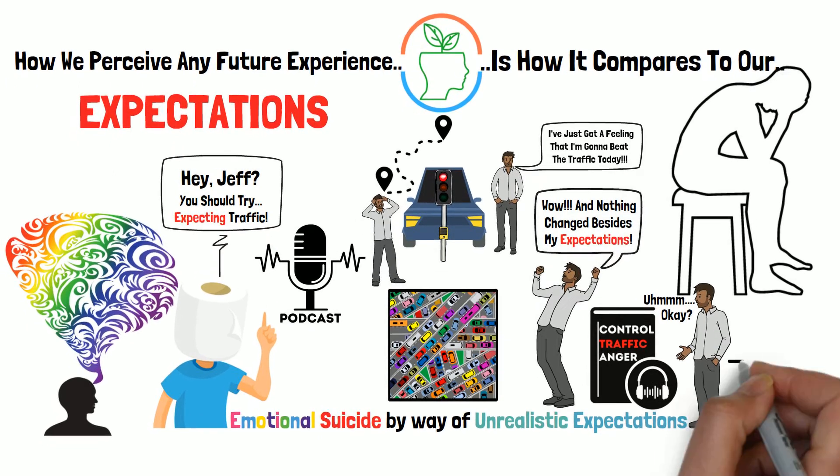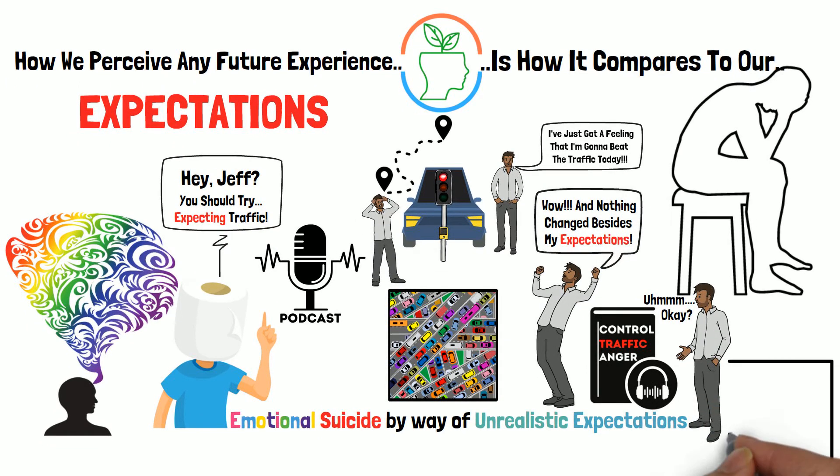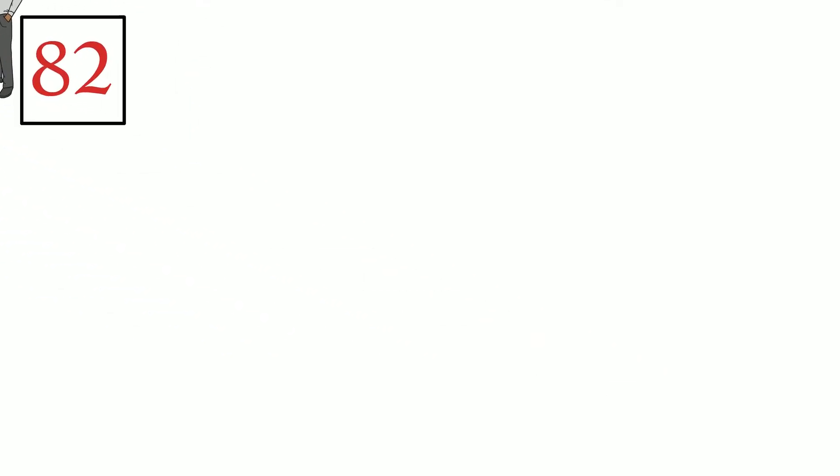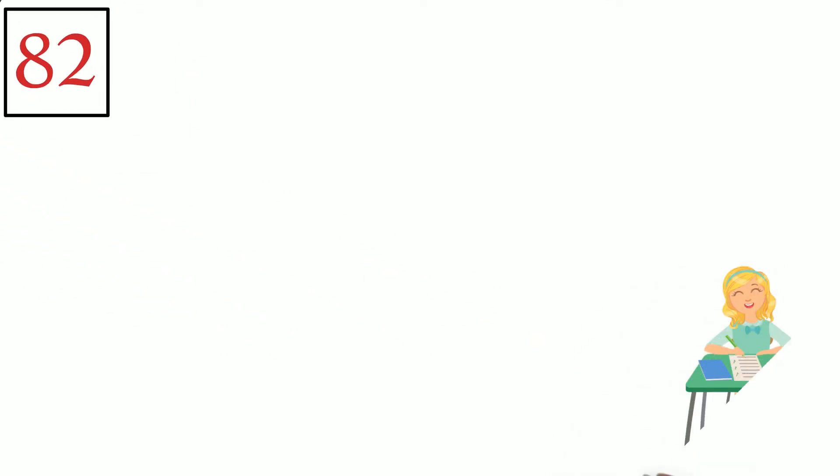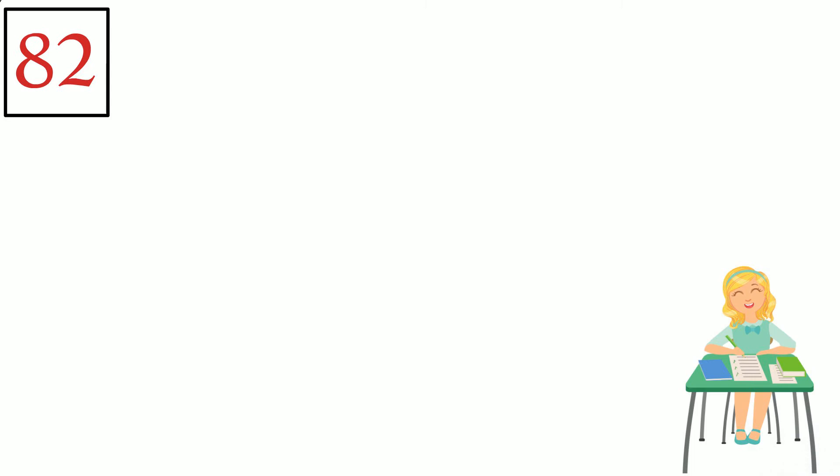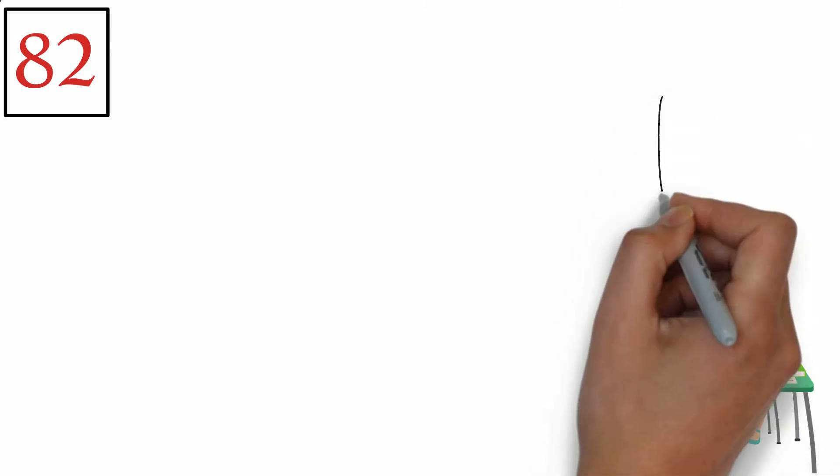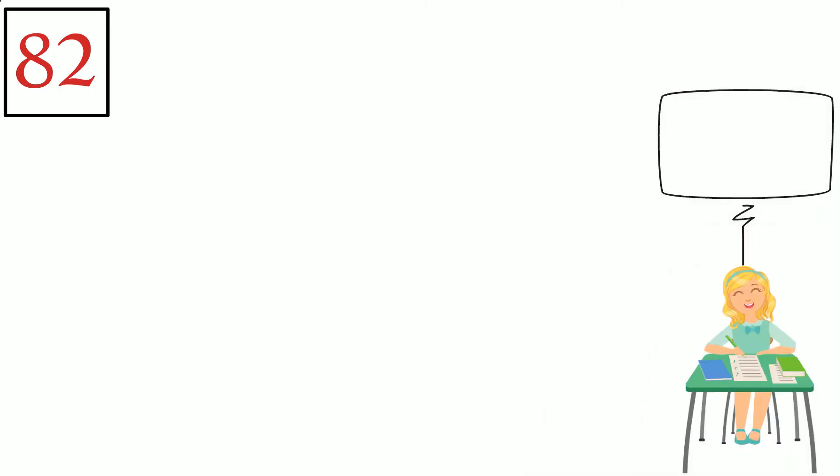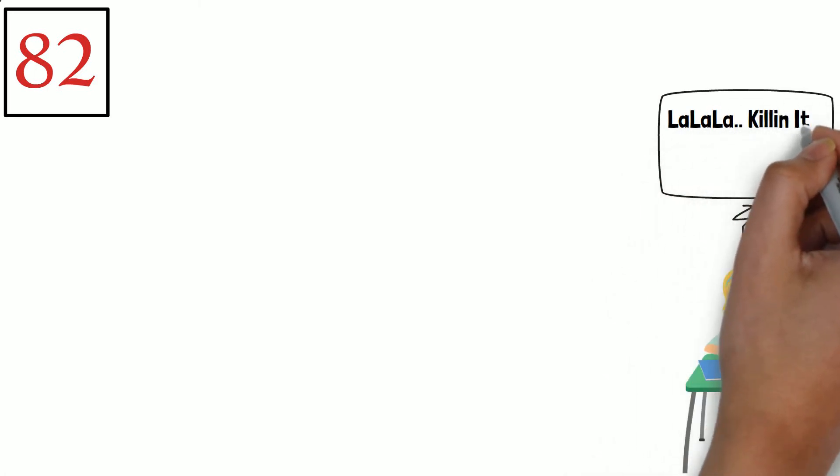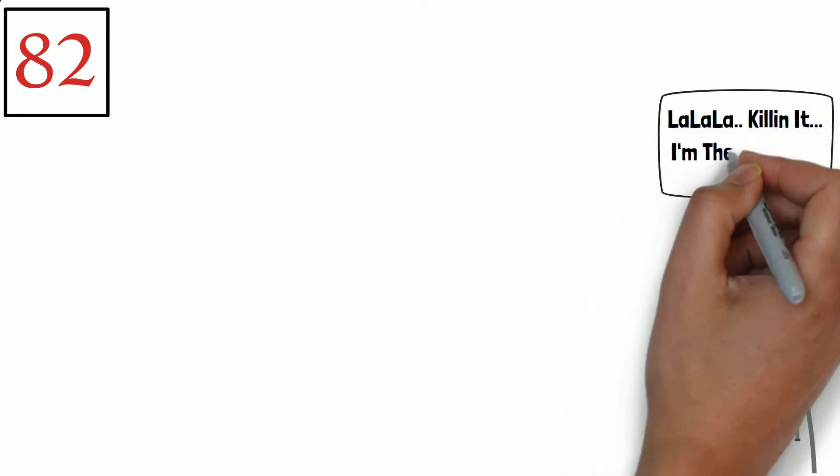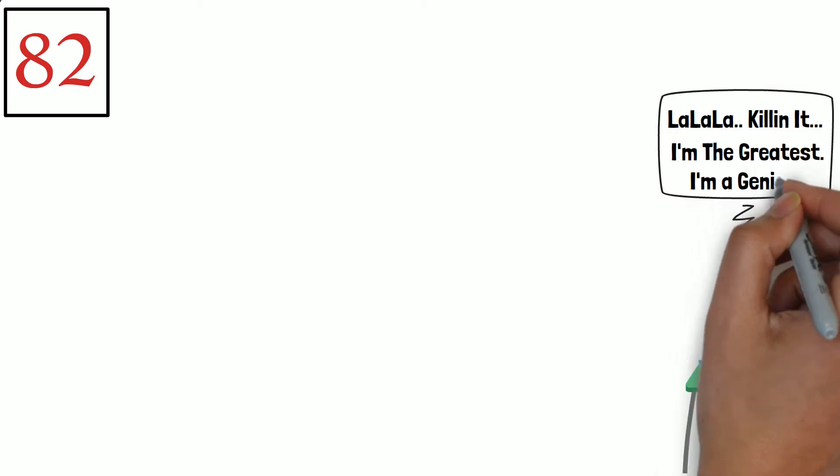For example, let's look at how your expectations could influence your perception of making an 82 on a recent psychology exam. After studying for a week straight, you couldn't be more confident as you turn in your exam. You call your friend as you walk out of class. There's no way I made below a 95. To be honest, I might have made a 100. You spend days celebrating.